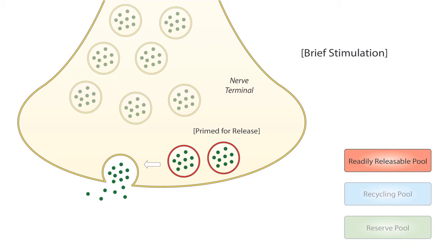As such, when an action potential reaches the nerve, these are the first vesicles that undergo exocytosis and release neurotransmitters into the synaptic cleft. It's also important to note that this pool only contains around 1% of all synaptic vesicles in the neuron, so it is quickly depleted.